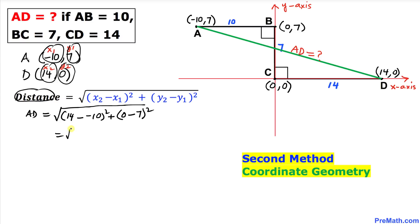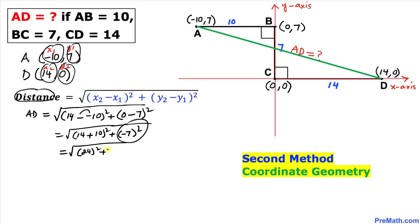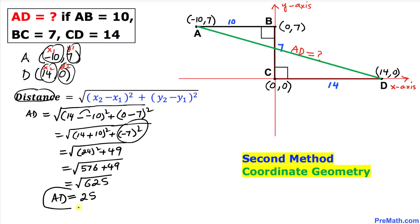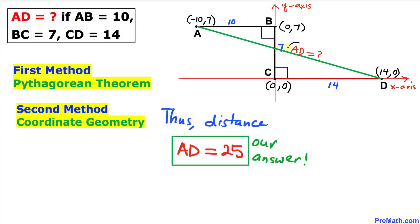So AD equals the square root of (14 - (-10))² + (0 - 7)². Simplifying: the double negative becomes positive, giving us 24², and (0 - 7)² gives positive 49. That's the square root of 24² plus 49, which is the square root of 576 + 49 = square root of 625, which is 25. So the distance AD is 25.